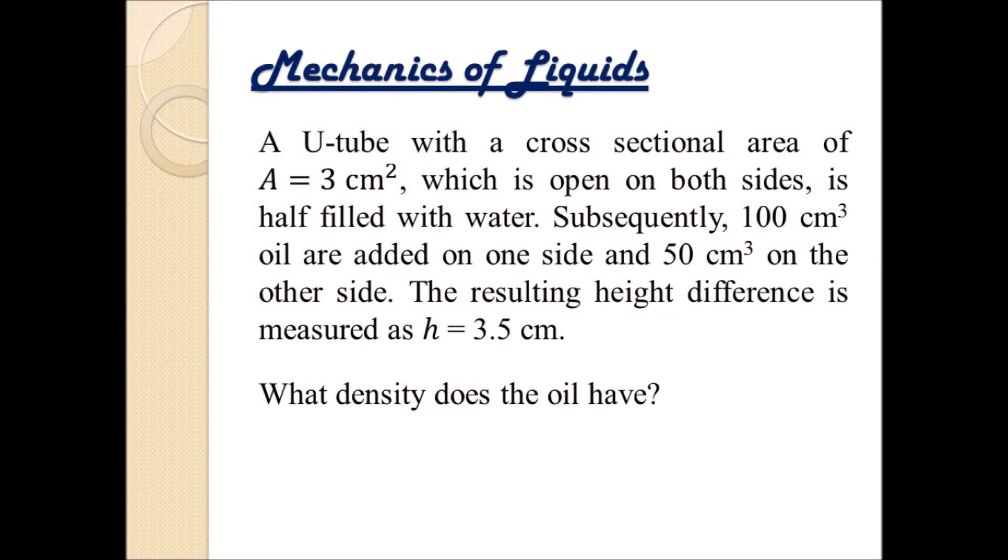A U-tube with a cross-sectional area of A equals 3 cm squared, which is open on both sides, is half filled with water. Subsequently, 100 cm cubed oil are added on one side and 50 cm cubed on the other side. The resulting height difference is measured as h equals 3.5 cm.